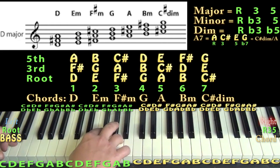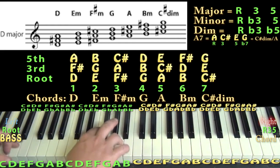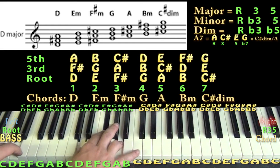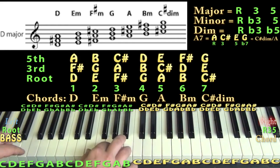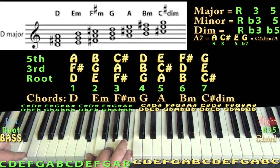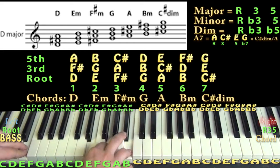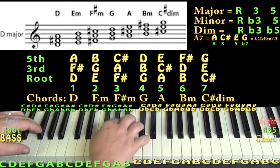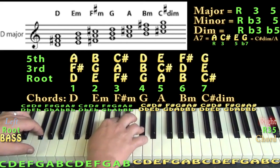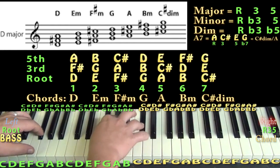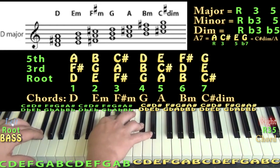In D major the chords are: D major is D, F sharp, and A. E minor is E, G, and B — you see a lot of that in Sweden. F sharp minor is F sharp, A, C sharp. I'm building all the chords root-three-five. Thirds sound awesome, which is why chords are built that way — it's basically a skip-skip thing.